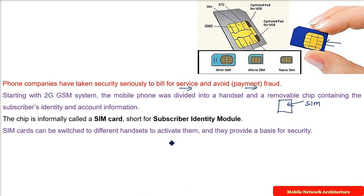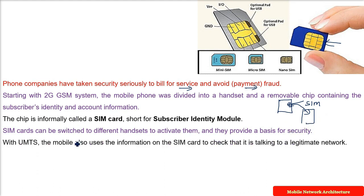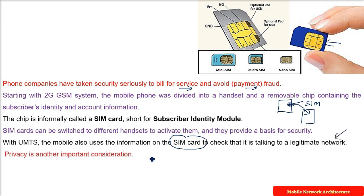You take one mobile and put in the SIM. If you take another mobile, you can transfer the same SIM to it. This also provides a basis for security — people can take a mobile but they cannot use your SIM. With UMTS, the mobile also uses information on the SIM card to verify that it is talking to a legitimate network.